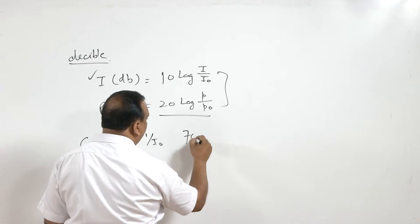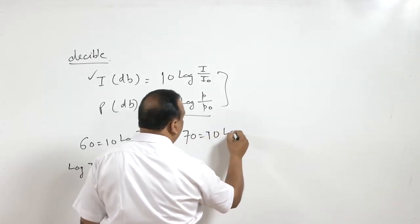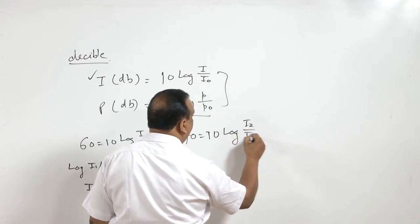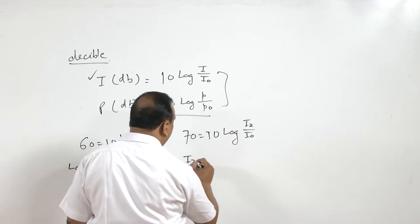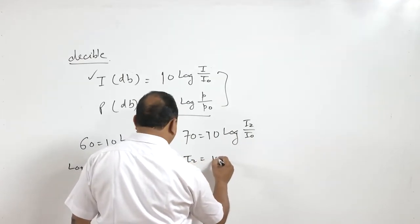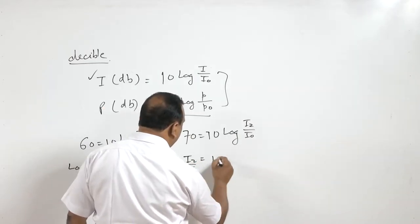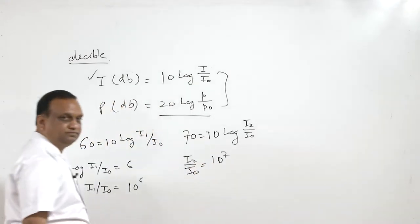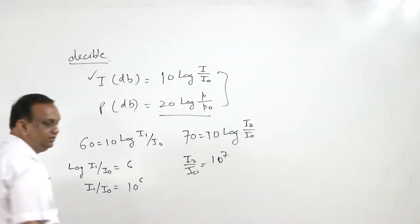Similarly, 70 = 10 log(I₂/I₀), so I₂/I₀ = 10⁷. Therefore I₁ = 10⁶ × I₀ and I₂ = 10⁷ × I₀.